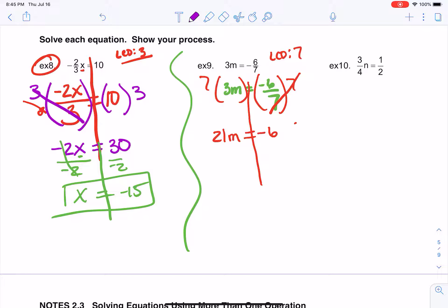Now I still don't have m completely alone, so I'm going to divide both sides by 21, because that's the opposite of multiplication. So now I have my variable all by itself. And this is a yucky fraction. I'm just going to simplify it the best that I can. So my final simplified fraction is going to be negative 2 over 7.